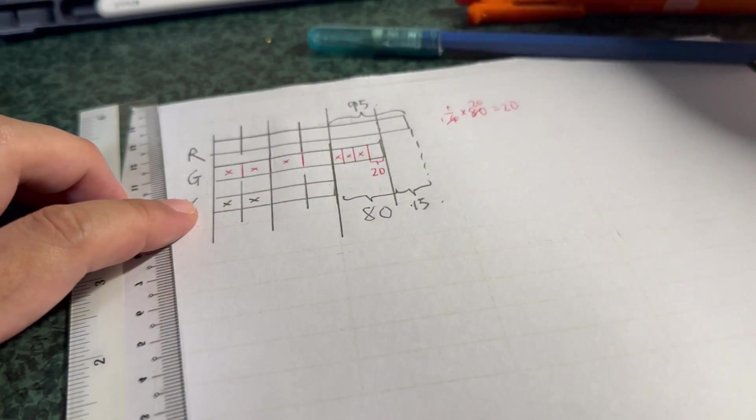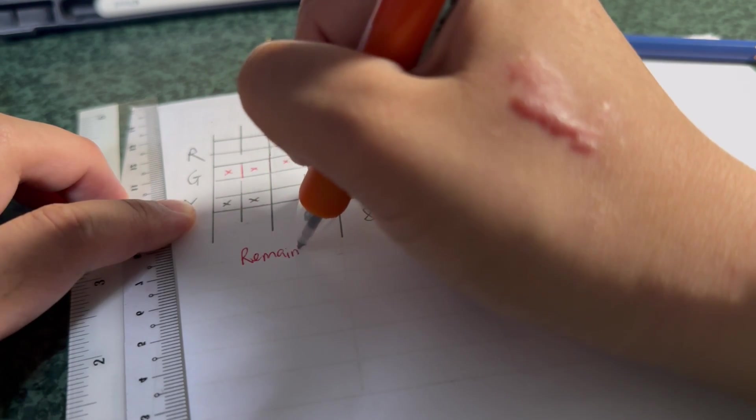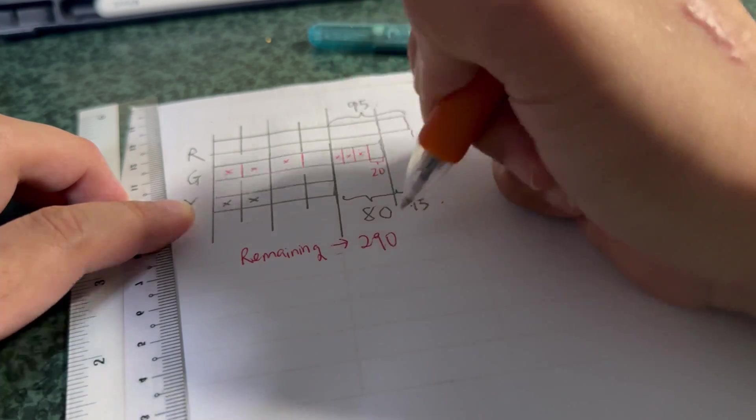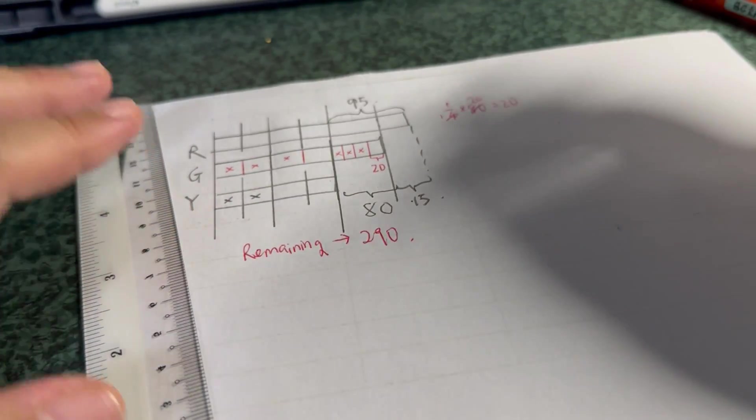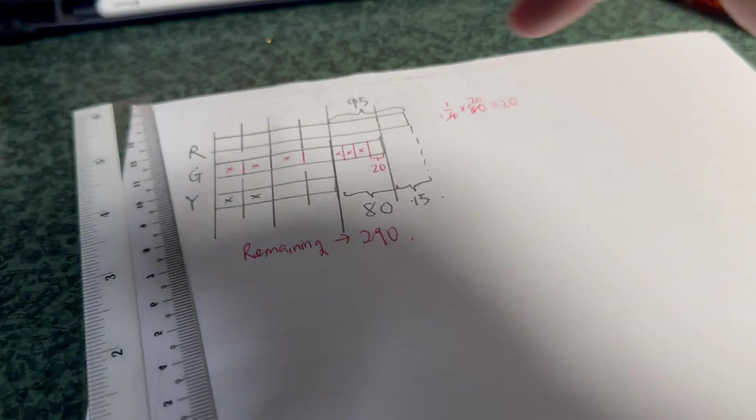All right, and then now they say that remaining parts is 290.